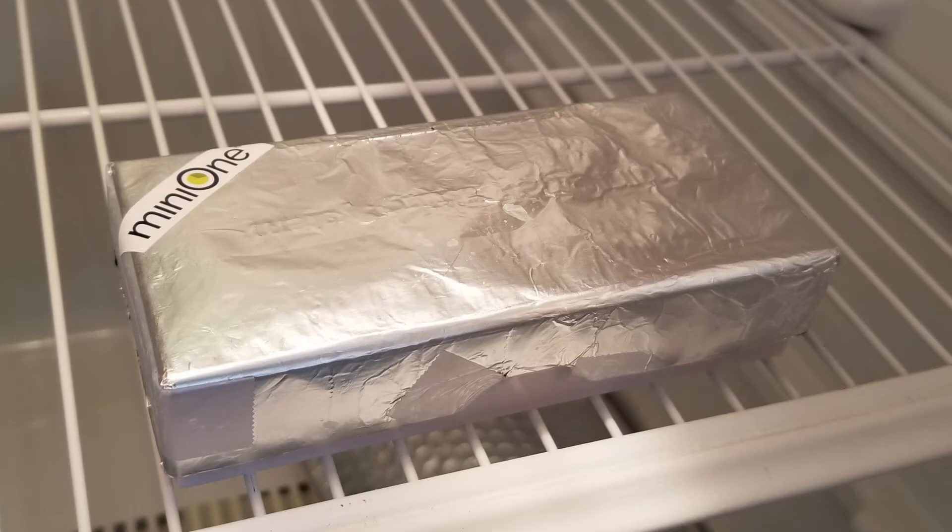Remember, gel green cups contain a light-sensitive DNA stain, so keep them protected from light as much as possible. A good way to do this is to wrap the casting stand in aluminum foil.